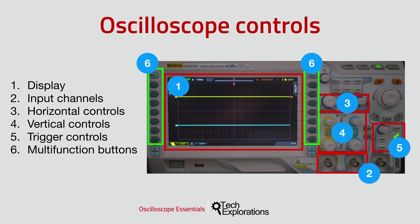5. Controls that we use to set up the kind of change in the signal that the oscilloscope should look out for in order to start displaying and/or recording the signal. And finally, 6. There's a bunch of other buttons that have different functions depending on what the oscilloscope is doing — so these are multifunction buttons. Oscilloscopes offer many other features depending on the brand and model, but all of them have these six UI elements. Throughout the experiments in this course, you'll get plenty of practice using them.